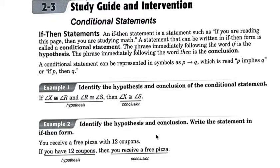Example 2. Now it says to identify the hypothesis and conclusion, but you have to write it out in an if-then form first. It starts off with you receive free pizza with 12 coupons. Well, what has to happen first is you have to get the 12 coupons.